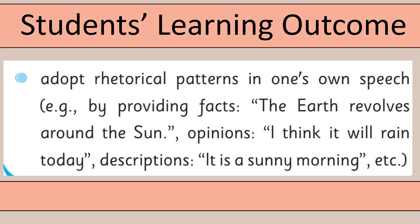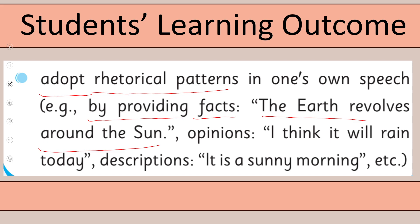Today we have this student's learning outcome which says: adopt rhetorical patterns in one's own speech. For example, by providing facts like 'the earth revolves around the sun,' opinions like 'I think it will rain today,' and descriptions, for example 'it's a sunny morning.' This is our student's learning outcome and here we will talk about rhetorical patterns when we are speaking — whether what we are saying is a fact or an opinion, and when we are describing things in detail.